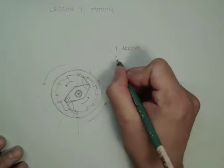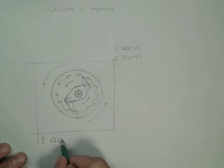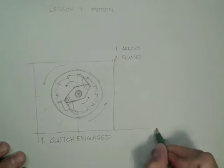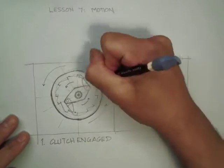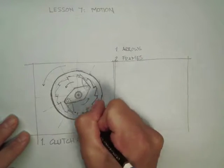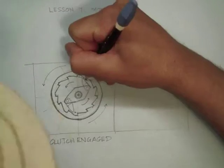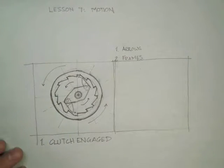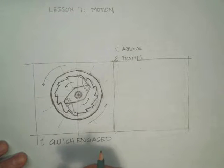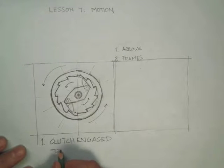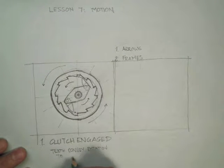We use arrows to show the directions of rotation. In this case when the clutch turns counterclockwise the flywheel also turns counterclockwise. And this brings us to why we need a second way of showing motion, namely frames.